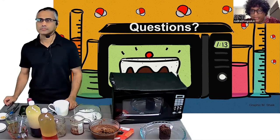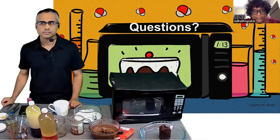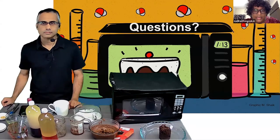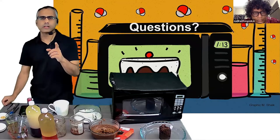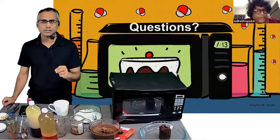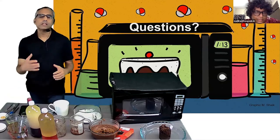Dave clarifies: he actually meant the standard oven and not a convection oven. He asks: is there a difference between a convection oven and an OTG? An OTG is an oven-toaster-grill — one of those small appliances.